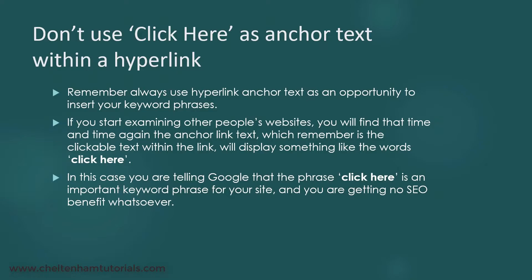One of the very common mistakes I see over and over again is a phrase like 'click here' — for instance, 'click here to download my SEO tips and tricks' — where the words 'click here' are actually the clickable link, the anchor text. What you're really telling Google is that the words 'click here' are important. What would make far more sense is to have the words 'SEO tips and tricks' as the clickable anchor text. So don't make this mistake — if you're going to have clickable links to documents or other pages, the actual clickable bit should not be 'click here'; it should be something relating to the target page.